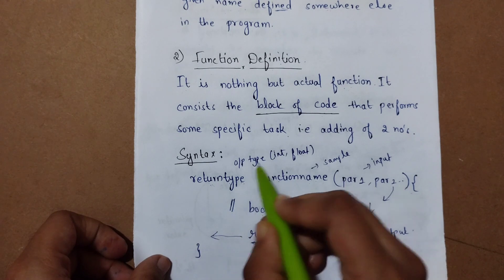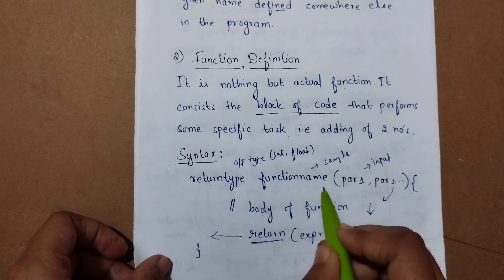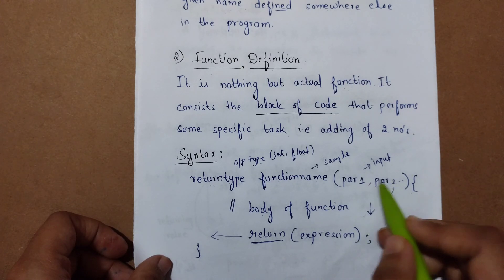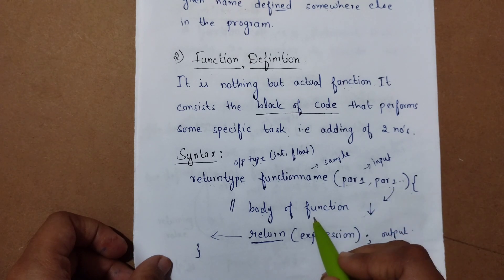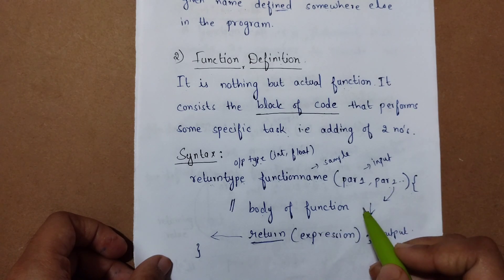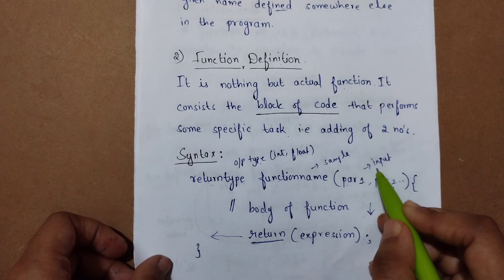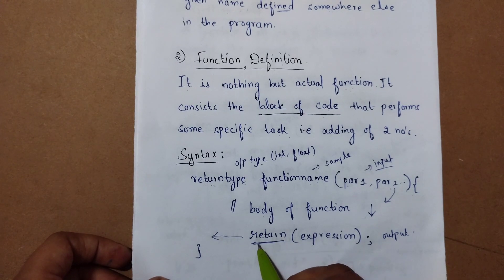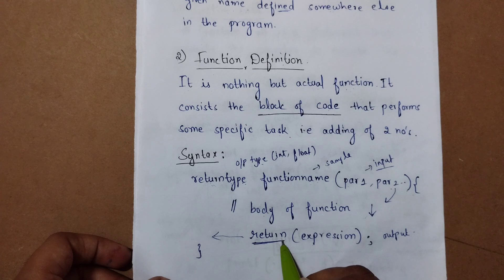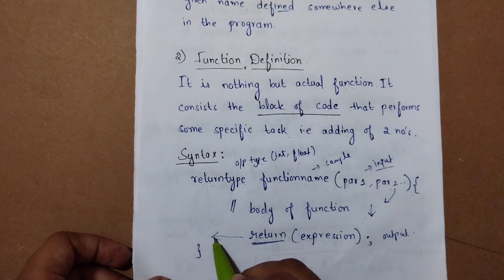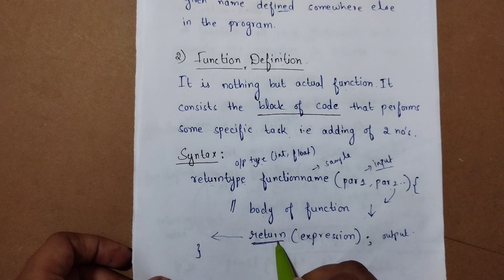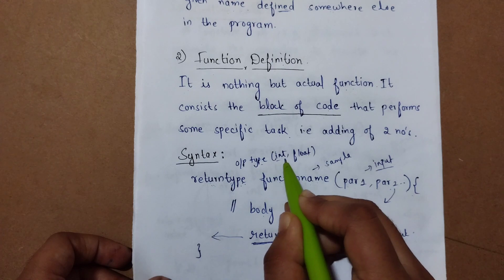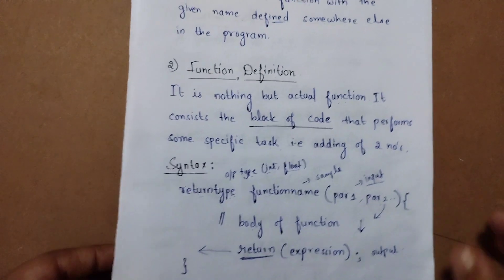The return type is the output type, such as int or float. The function name can be anything. Parameters are the input to the function. The logic or operation is performed on this input, and after performing the operation, the output is returned from the function. The return type indicates what type of output is returned — int, float, or anything.